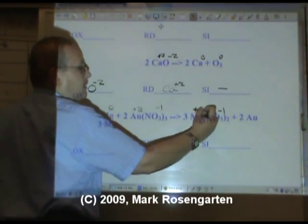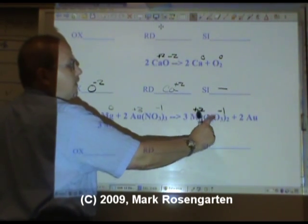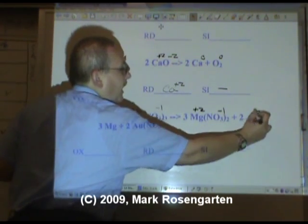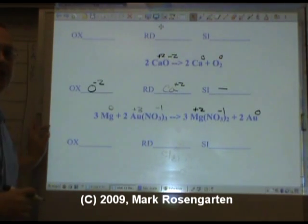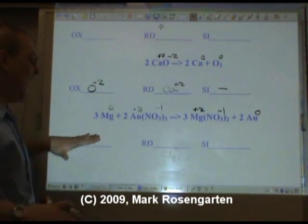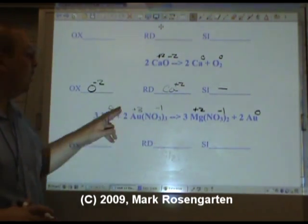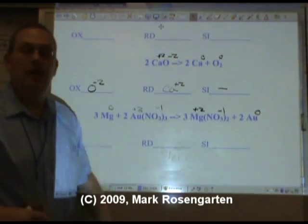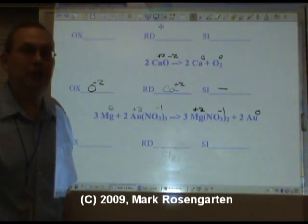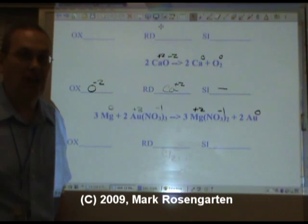Here, the magnesium becomes plus two. That's why there's a two down there. And the gold is by itself, so it has no charge. Now, I must repeat this. You cannot do this without first doing this. Doing so would be like brushing your teeth with a chainsaw. It's pointless and it's painful.